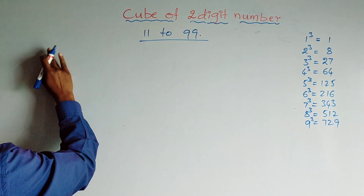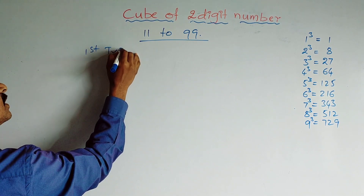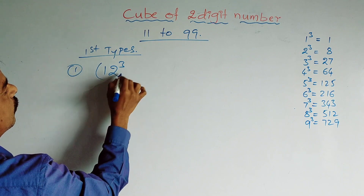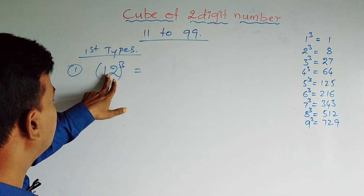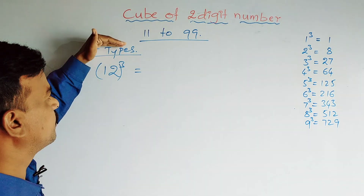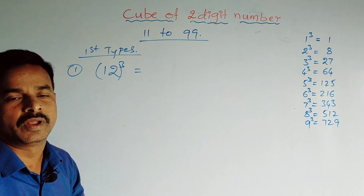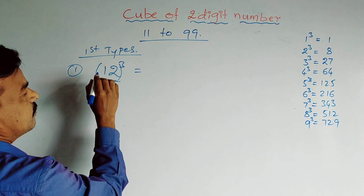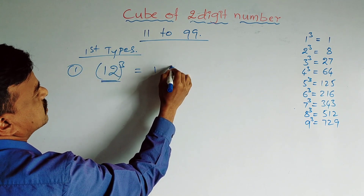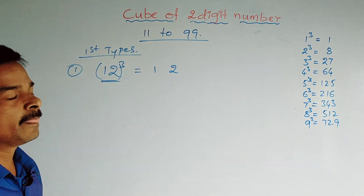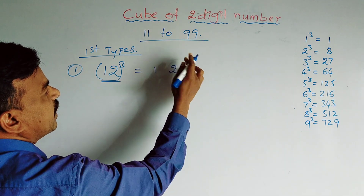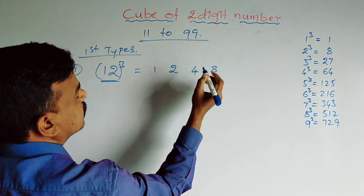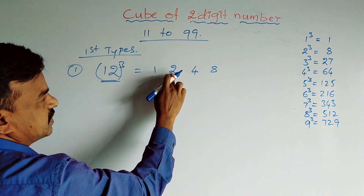Now let us take the first type of numbers. I am taking 12³. You see here, 12 starts with one, that is why it is a first-type number. For 12³, we have to write the digits as they are: 1, 2. Then write the second number squared: 2² = 4. Then write the second number cubed: 2³ = 8.